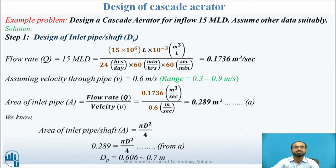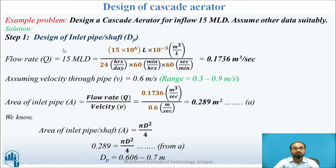Let us have one design problem to understand how to design a cascade aerator. The problem is: design a cascade aerator for an inflow of 15 MLD, and assume suitable data. The first step is to design the inlet pipe diameter, that is Dp, the shaft inlet diameter.